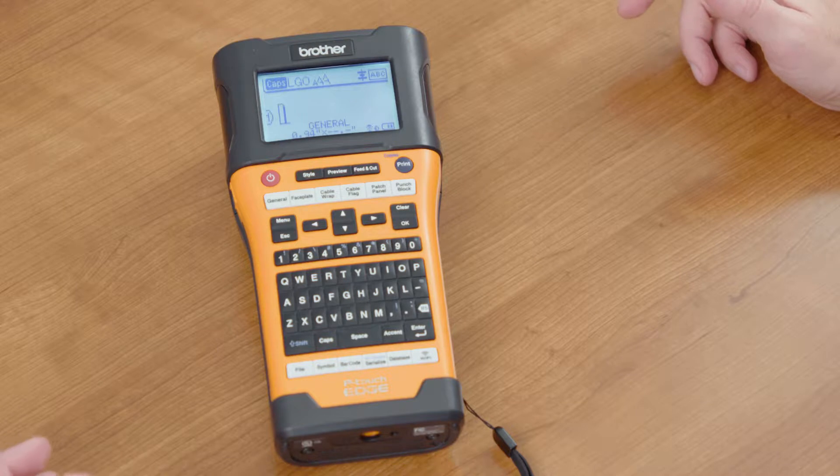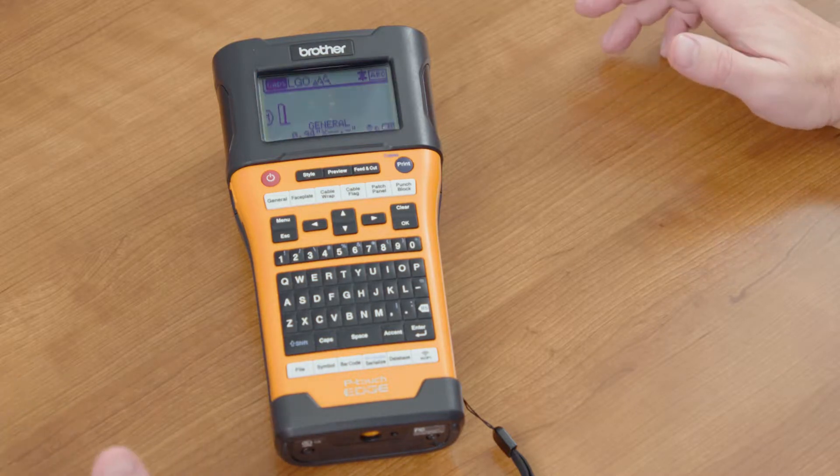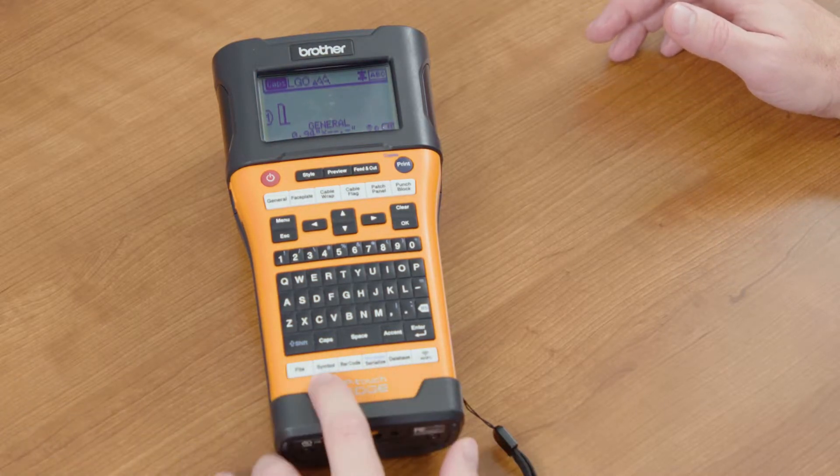Using the barcode feature on the PTE 550W is very simple. Just on the bottom, select the button that says barcode.